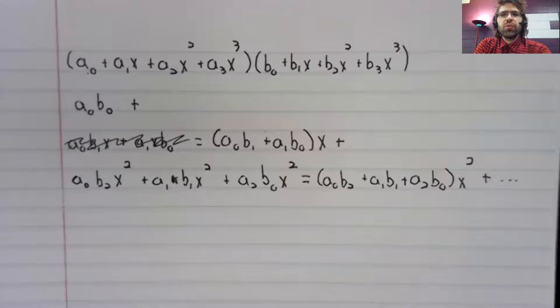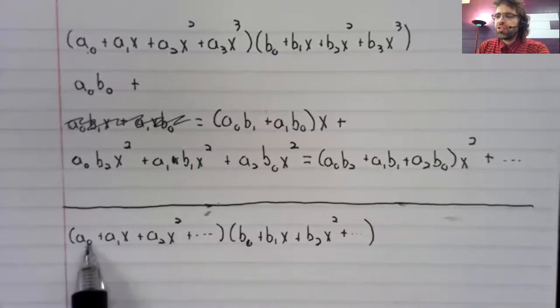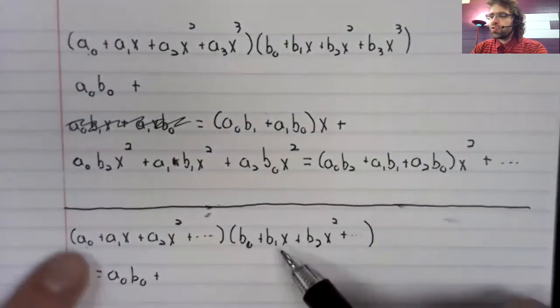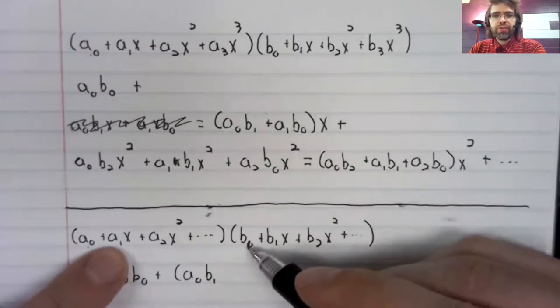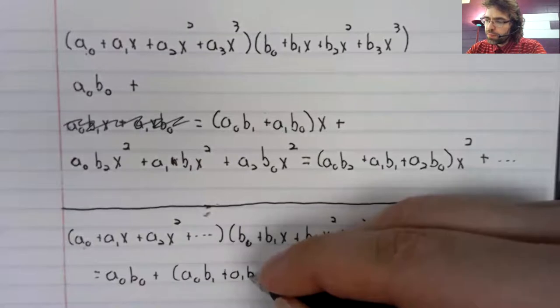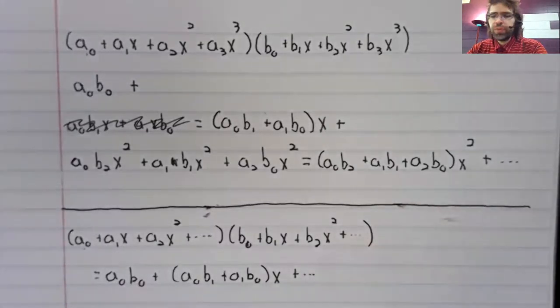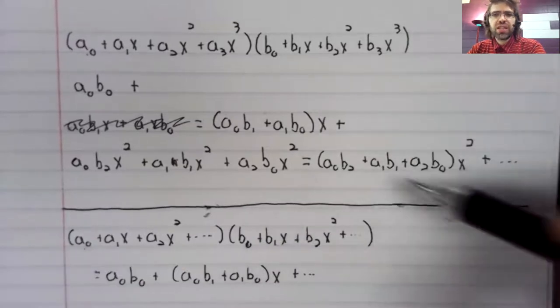If instead of finite polynomials, you have infinite power series, you can still build the product up like that, step by step. So the constant term. Then we look for linear terms. We get a linear term from this, and we get a linear term from this, just like happened up here. Then we look for our quadratic term. We can get a quadratic from these, from these, and from these. Just as happened up here.